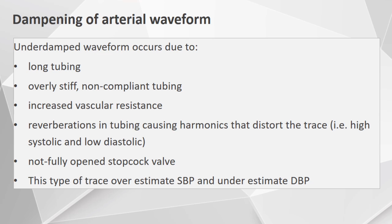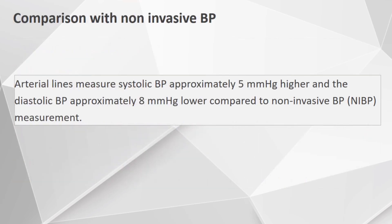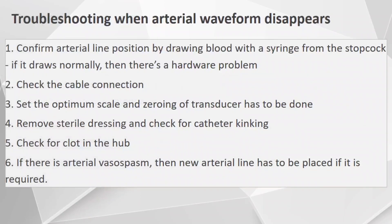Comparing invasive BP with non-invasive BP: the invasive systolic blood pressure approximately measures 5 mmHg higher than the non-invasive BP, and the diastolic BP measures 8 mmHg lower than the non-invasive BP.